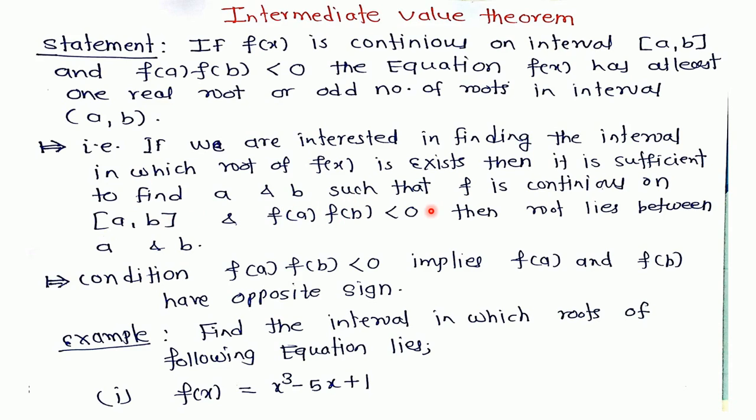f(a) × f(b) < 0, that is f(a) and f(b) have opposite signs. Then the root lies between a and b.